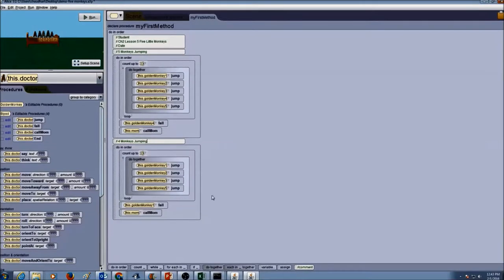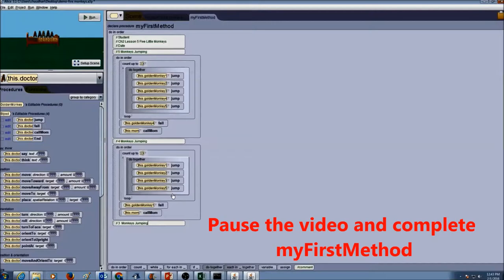So now do the same thing for 3 monkeys jumping. I would drag the comment in here and type in 3 monkeys jumping. And then again I am going to copy and paste this and just remove extra lines of code that is not needed.